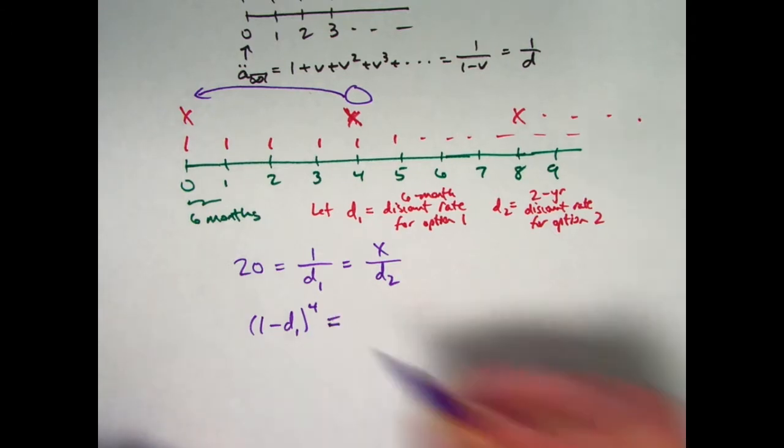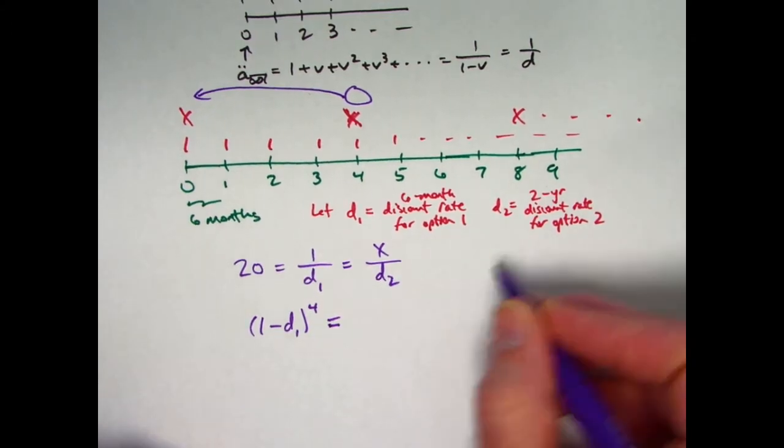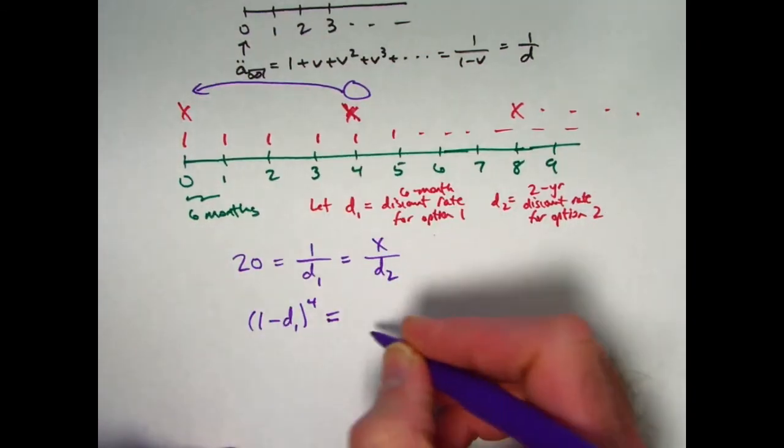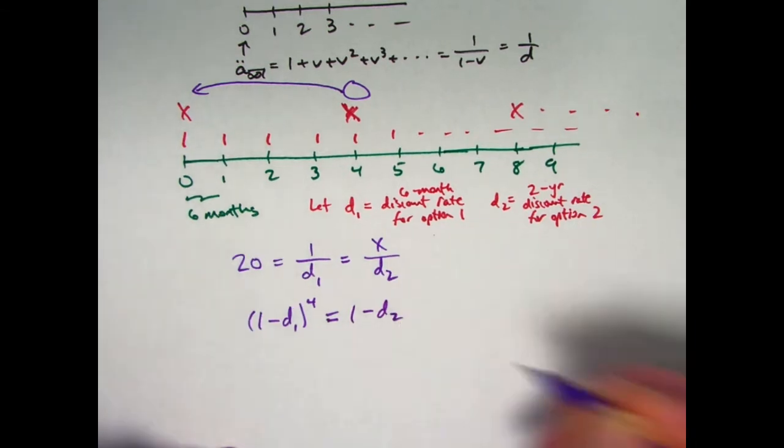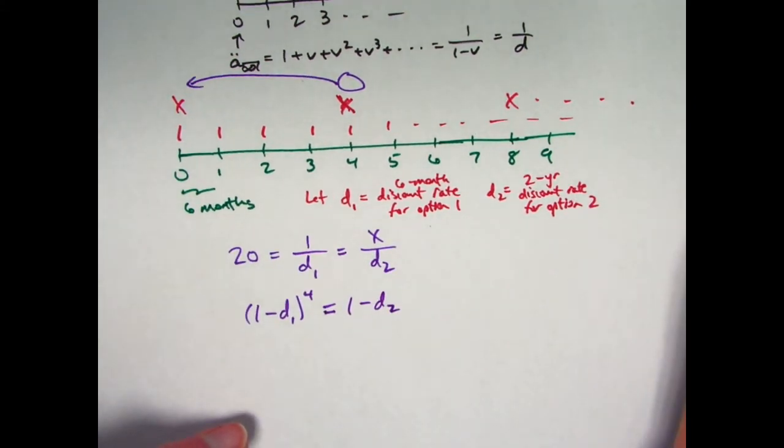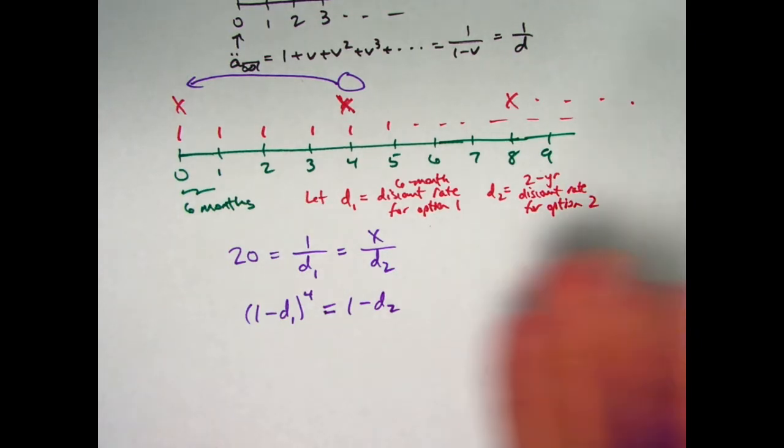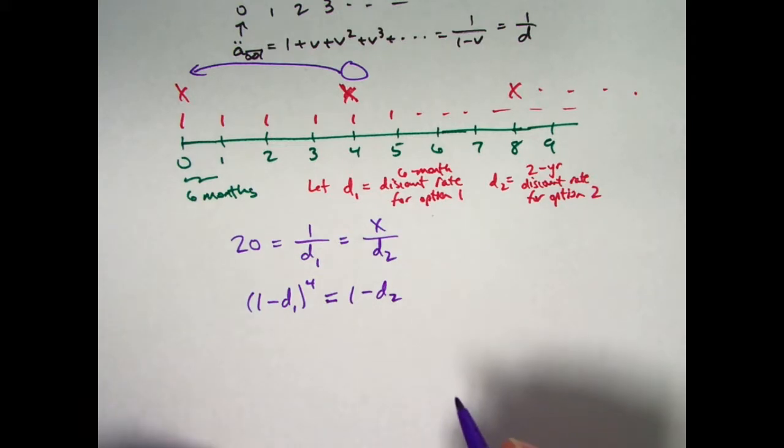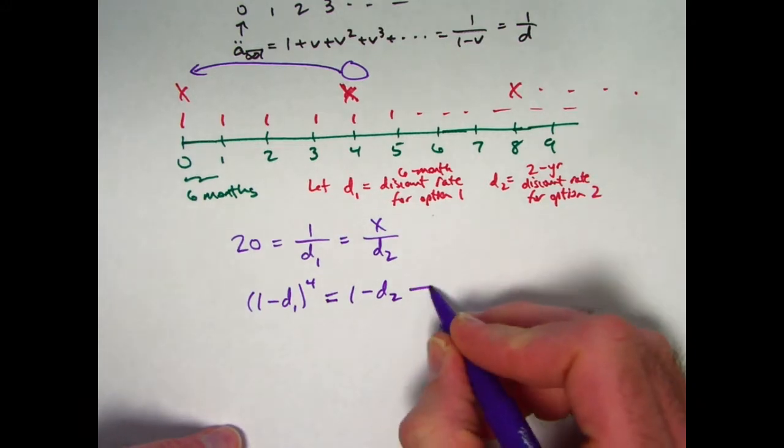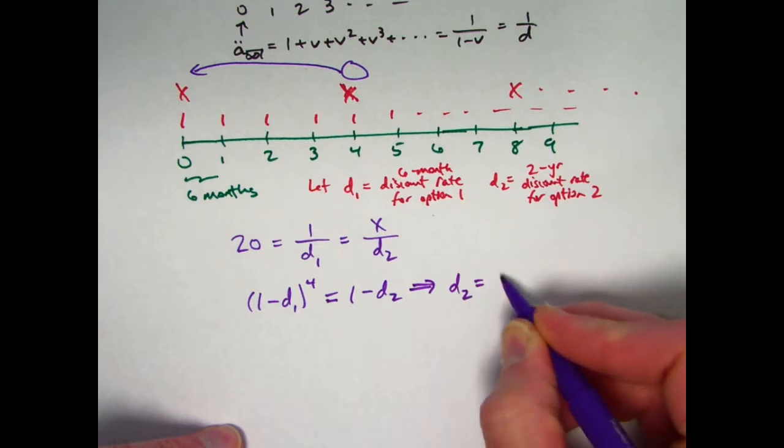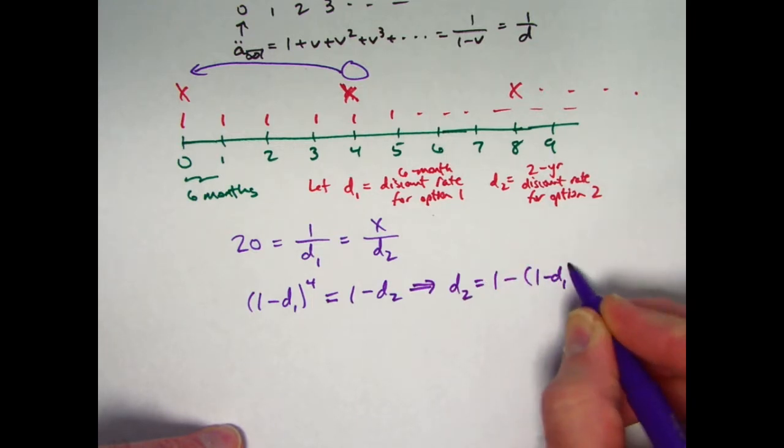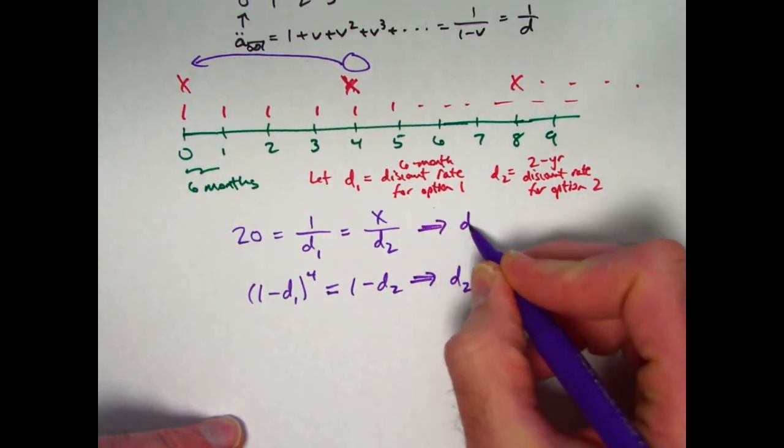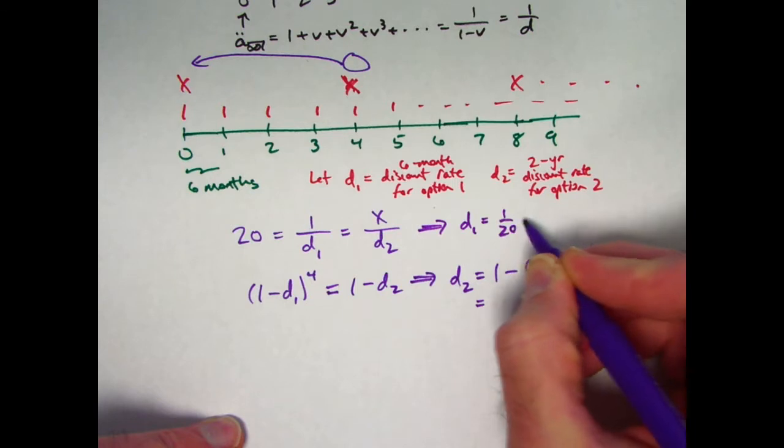To get the present value at time 0 with d2, it's a two-year discount rate. I only need to apply it once. (1 - d2) would be what you might call v2, the present value discount factor for the second option, which again is a two-year period. There's the key equation relating d1 and d2. I can now solve this for d2 in terms of d1. d2 will be 1 - (1 - d1) to the fourth. Now plug in what d1 is. That's pretty easy. d1 is 1/20th, which is 0.05.